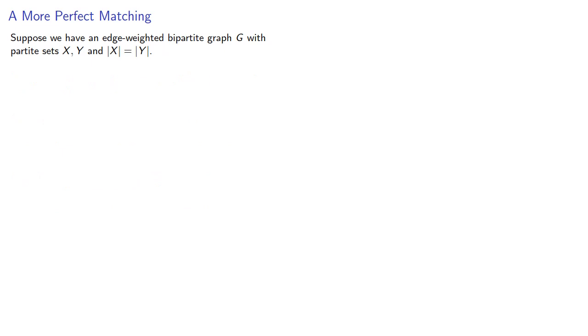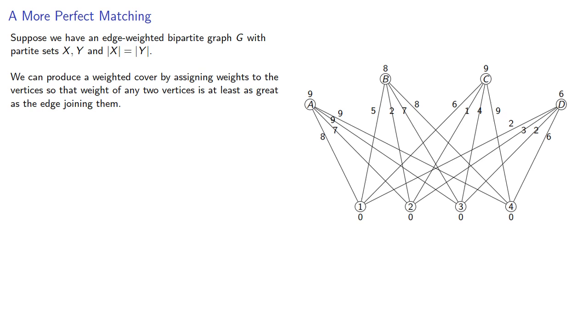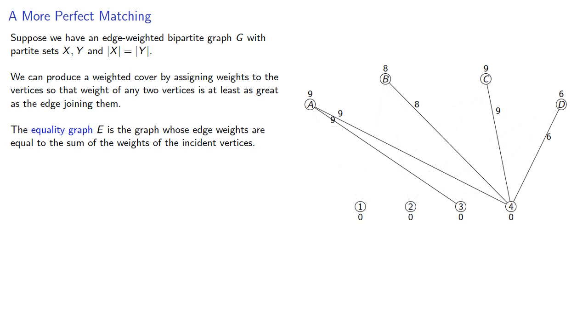Suppose we have an edge-weighted bipartite graph G with partite sets X and Y where the size of X and Y are equal. We can produce a weighted cover by assigning weights to the vertices so that the weight of any two vertices is at least as great as the edge joining them. The equality graph is the graph whose edge weights are equal to the sum of the weights of the incident vertices.